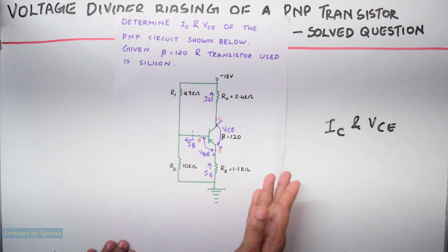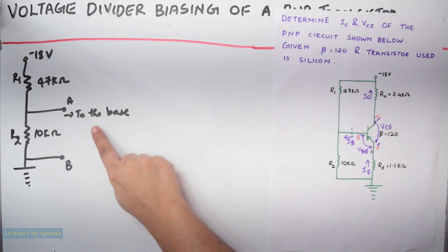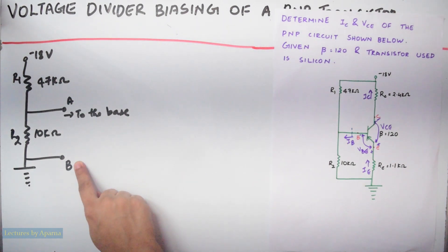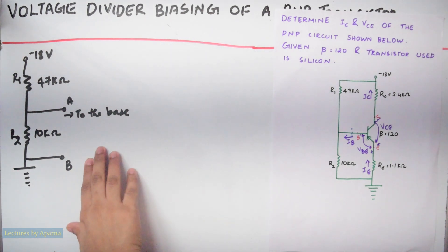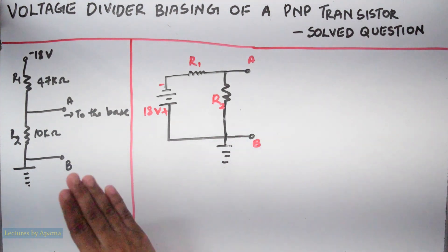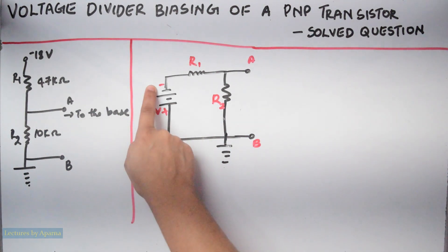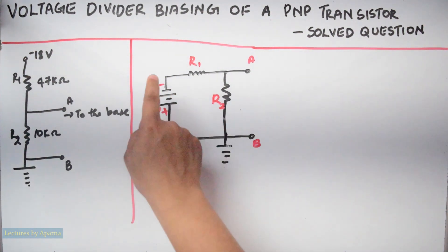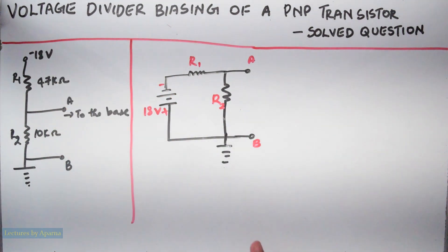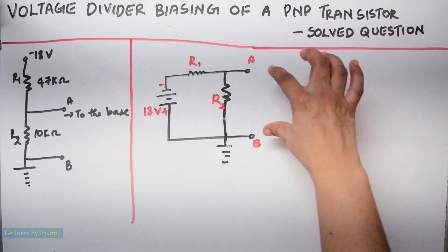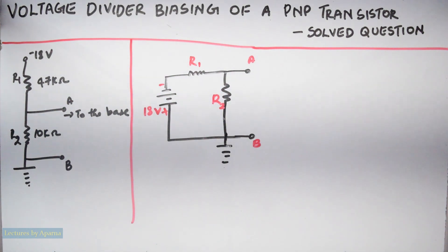Now the input section will be like this. This portion which goes to the base of the transistor can be named terminal A, and this portion which goes to the ground can be named terminal B. Now redraw this circuit. We have redrawn this circuit like this. The negative terminal of 18V is connected to resistance R1, that is why it is shown as minus 18V here. R1 is connected, then R2, and across R2 come terminals A and B.